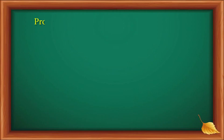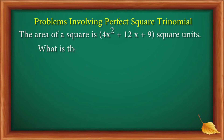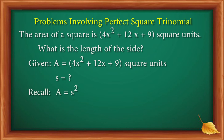Our last example — problems involving perfect square trinomial. The area of a square is 4x squared plus 12x plus 9 square units. What is the length of the side? The given: area equals 4x squared plus 12x plus 9 square units. Recall that the area of a square equals the side squared, so 4x squared plus 12x plus 9 equals side times side.